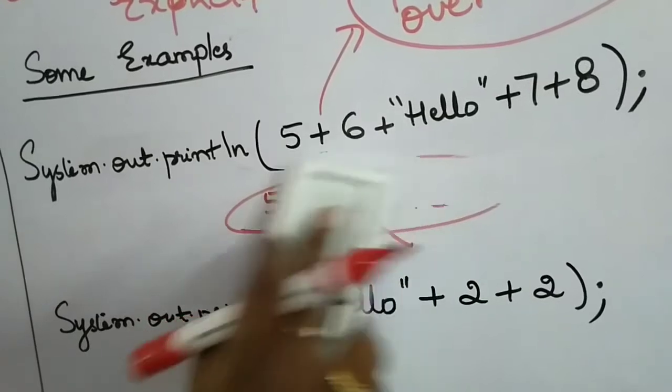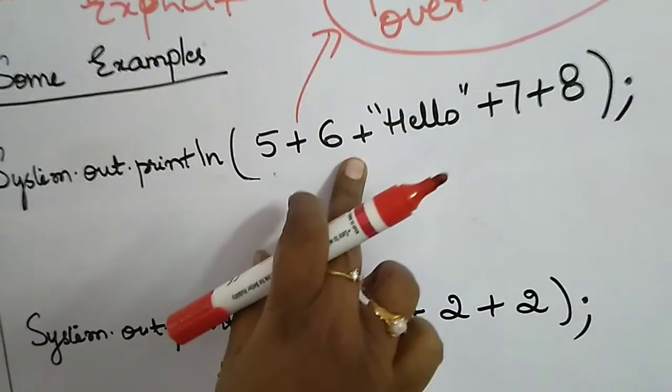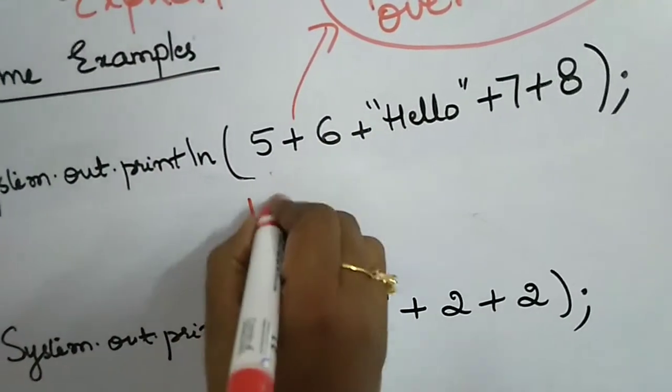Here, since the two operands are numerical, it will perform addition. Five plus six is eleven.